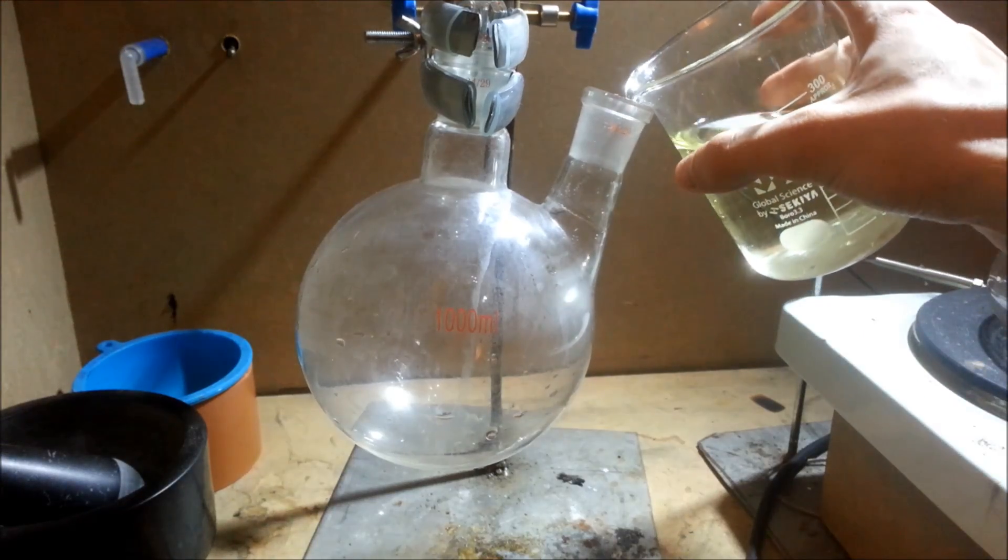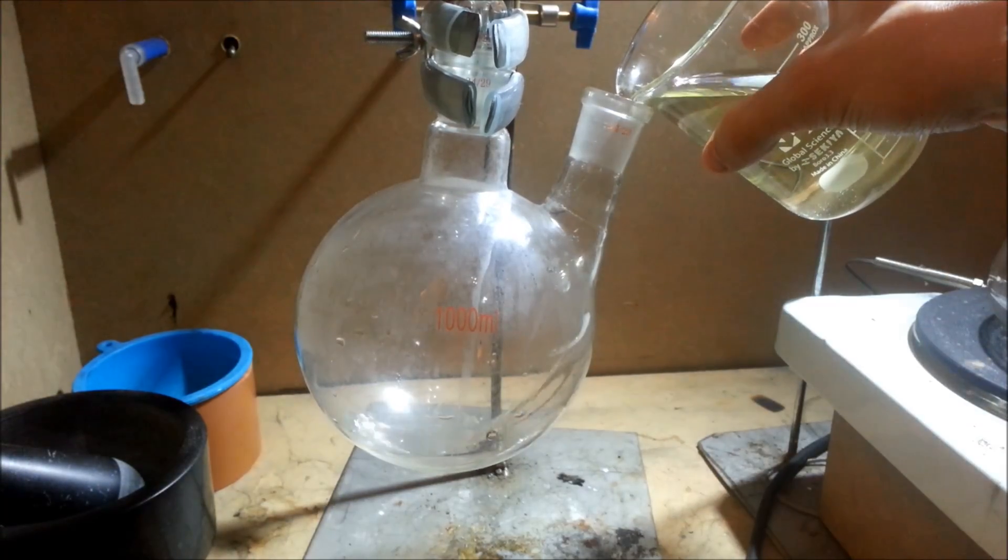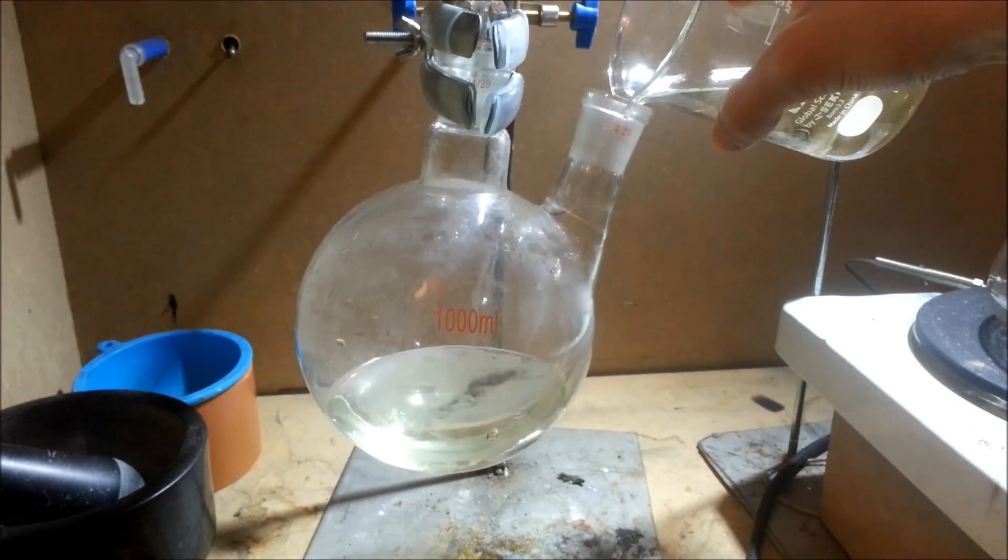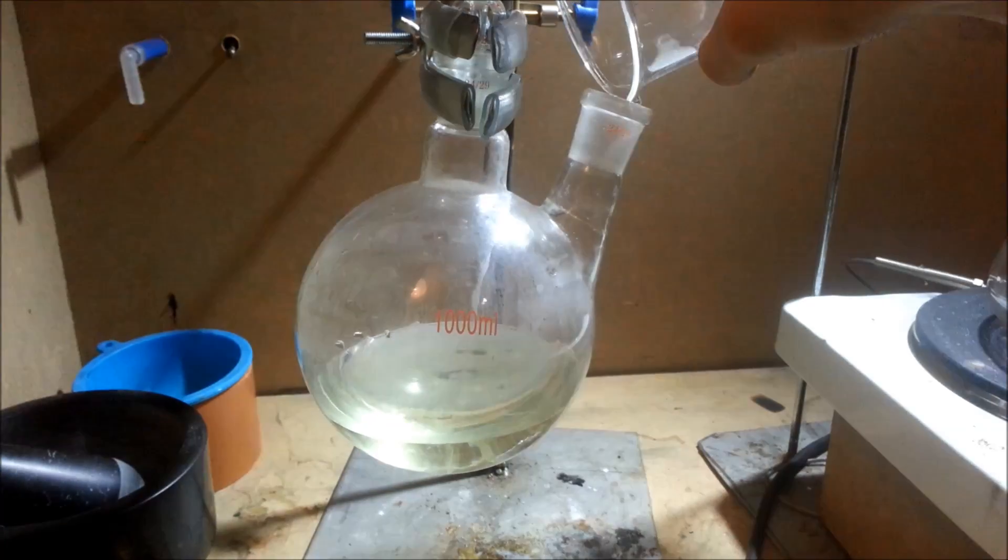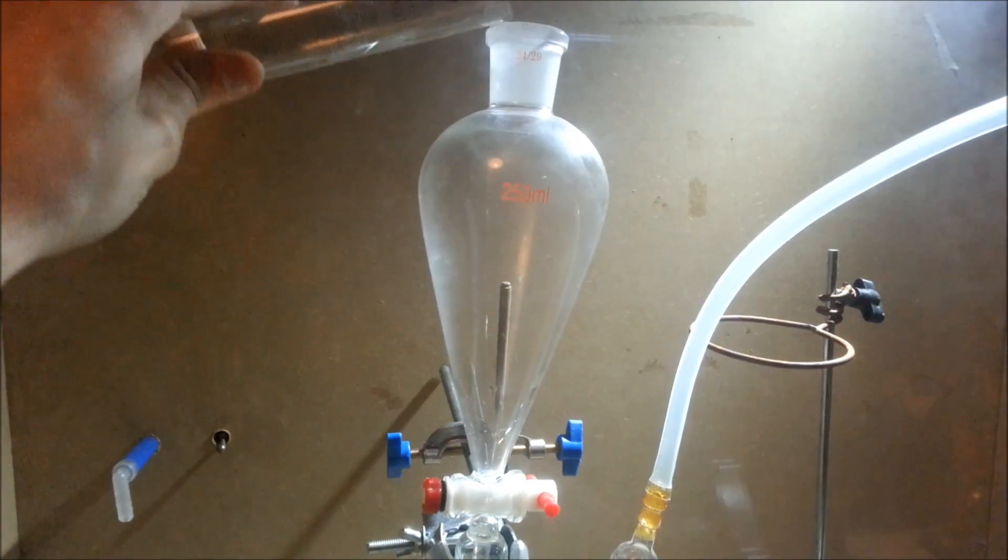Now, 400 milliliters of 0.6 molar sodium hypochlorite solution was added to the round bottom, followed by the addition of 50 milliliters of 8 molar hydrochloric acid to the separatory funnel.